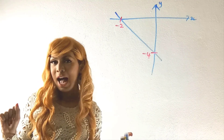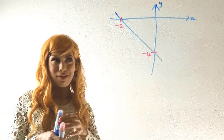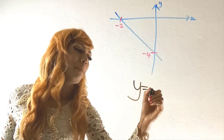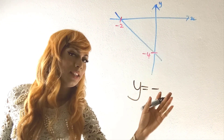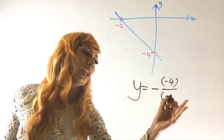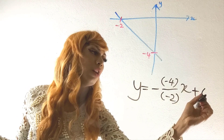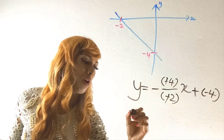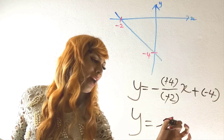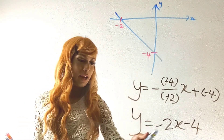Section six: forming an equation from a given graph. From the graph, identify the y-intercept and x-intercept. Using m = −(y-intercept)/(x-intercept): if y-intercept = −4 and x-intercept = −2, then m = −(−4)/(−2) = −2. So the equation is y = −2x + (−4), which gives y = −2x − 4.